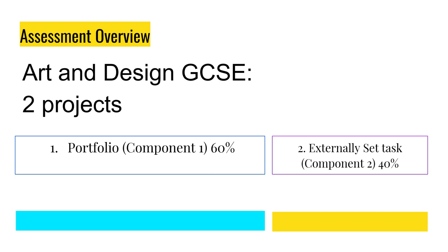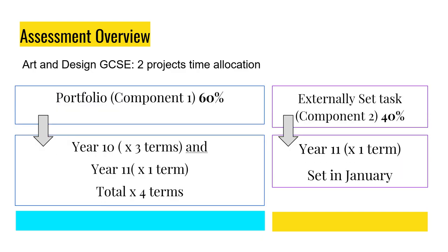So it's divided into two projects. The first is the biggest portion of the overall course — it's 60% — it's your portfolio project. The second project is what's called an externally set task, sent to us by the OCR examining body, and that's 40% of your overall GCSE. In terms of time allocation, the portfolio is created throughout Year 10 and the first term of Year 11 — four terms in total. The externally set task will be set in January in Year 11 and you just get one term to complete that.